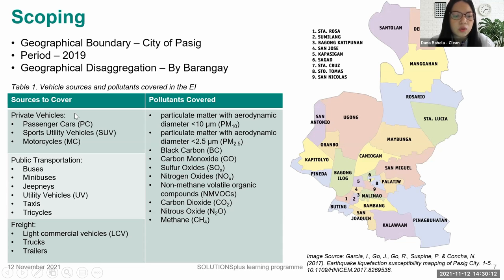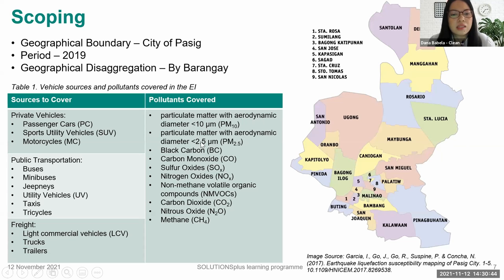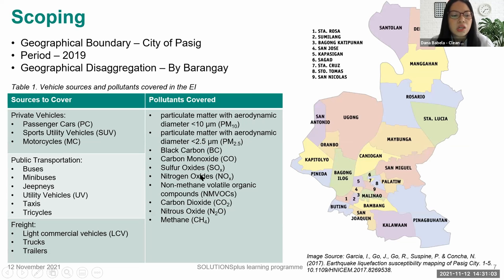Table one shows the vehicle sources and pollutants covered in the EI. These include private vehicles — passenger cars, SUVs and vans, motorcycles — and for public transportation: buses, minibuses, jeepneys, utility vehicles or UV Express, taxis, tricycles, and freight vehicles including commercial vehicles, trucks, and trailers. The pollutants covered include PM10 and PM2.5, black carbon, carbon monoxide, sulfur oxides, nitrogen oxides, non-methane volatile organic compounds (NMVOCs), carbon dioxide, nitrous oxide, and methane. These are combinations of criteria pollutants, greenhouse gases, and short-lived climate pollutants.